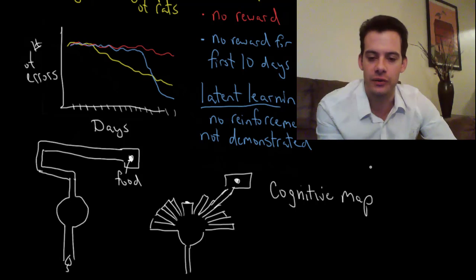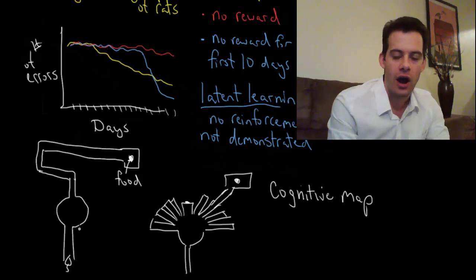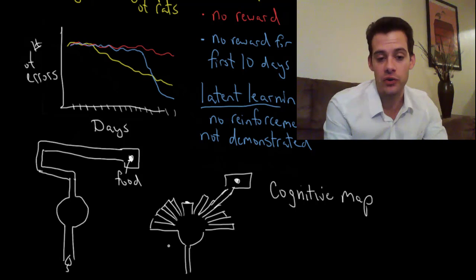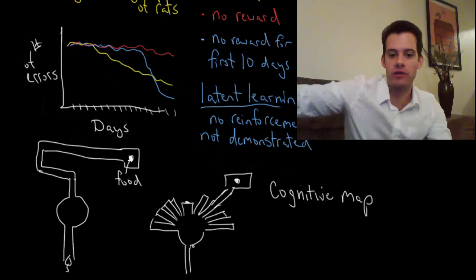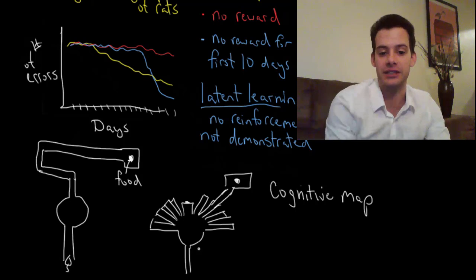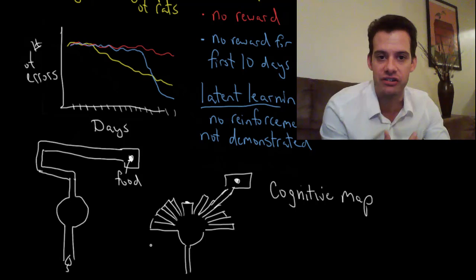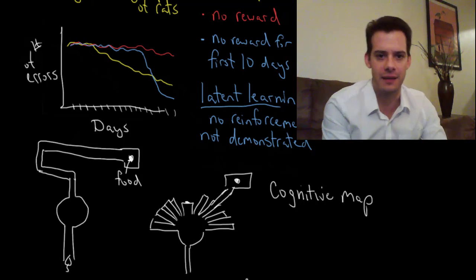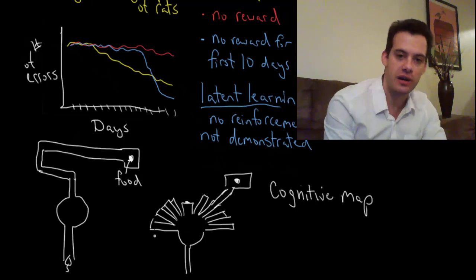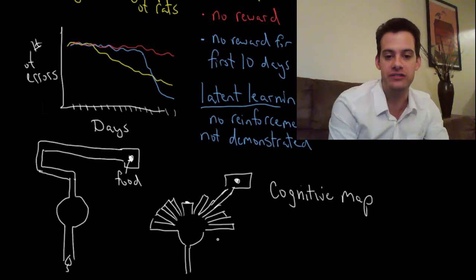What the cognitive map refers to is the idea that the rat actually has a notion about where the food is in relation to the starting point. The rat is not just learning turn left, turn right, turn right. The rat is actually learning I'm here and food is over there somewhere, so I should try to get over there. If I suddenly have a new path that goes that way then that's the one I should choose, instead of thinking of behavior as simply reinforced rote learning. That's the idea of the cognitive map. This shows that the rat must have some internal mental representation of the rat's location and the food's location in relation to the rat.